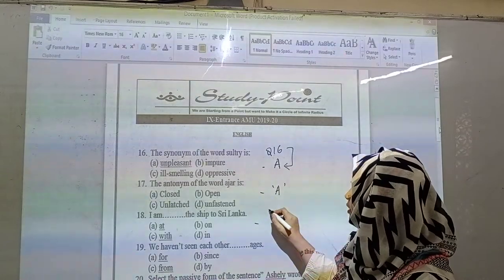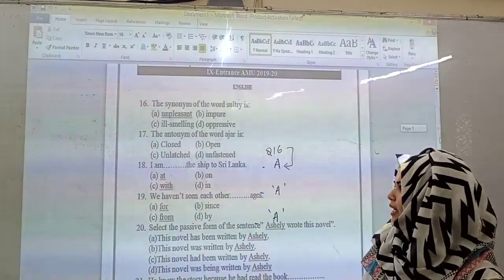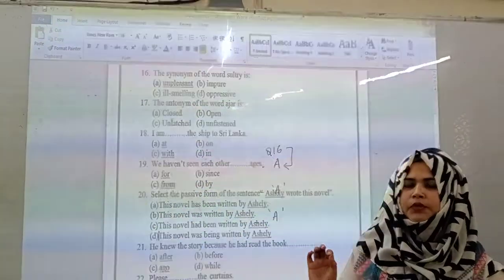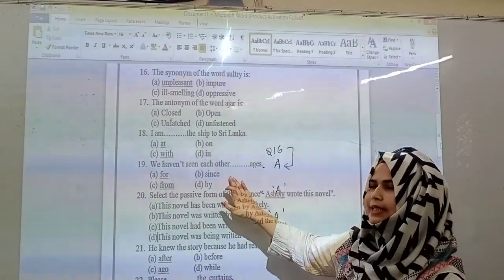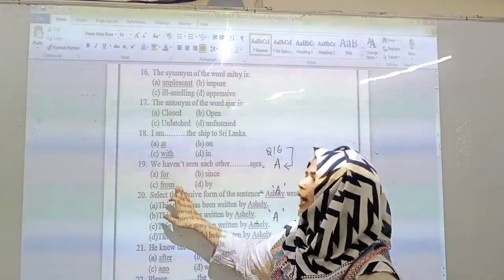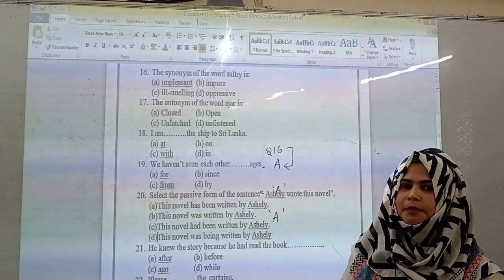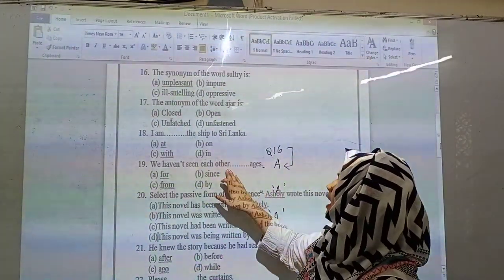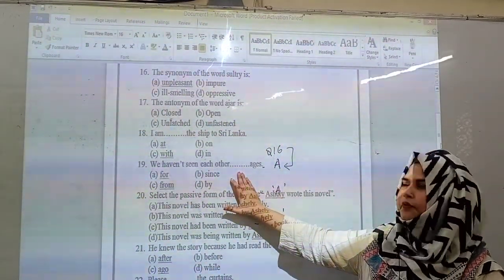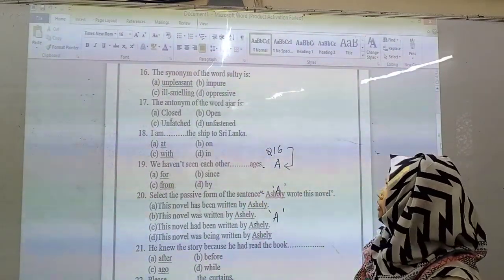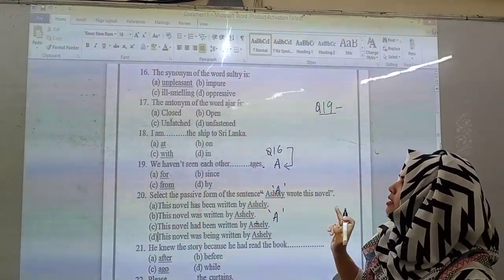Then comes: we haven't seen each other dash ages. Here we need preposition of time. For is used for a point of time. Since is used for a period of time. From also is used for period of time. And by is used as an instrumental preposition. So when we are saying we haven't seen each other, which option will you choose? For ages, since ages, or from ages? The best option here for question number 19 will be: we haven't seen each other for ages. So the option will again be A.